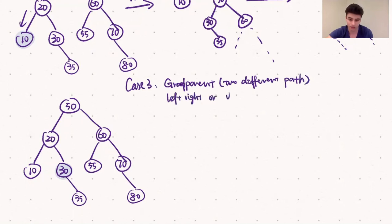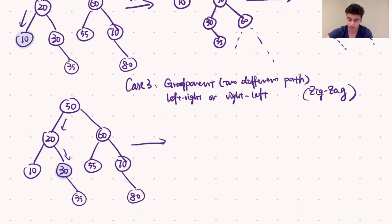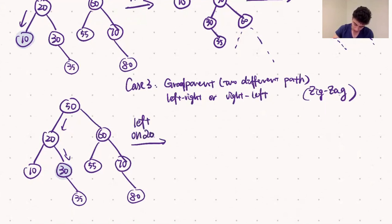In the example on the left, let's splay 30 to the root. Node 30 is reached from the root by going left and then right. Therefore, in order to splay it to the root, we first make a left rotation of 20 and then a right rotation at 50. The left rotation of 20 leaves us with a subtree rooted at 30, with left child 20, right child 35, and 20's left child being 10.